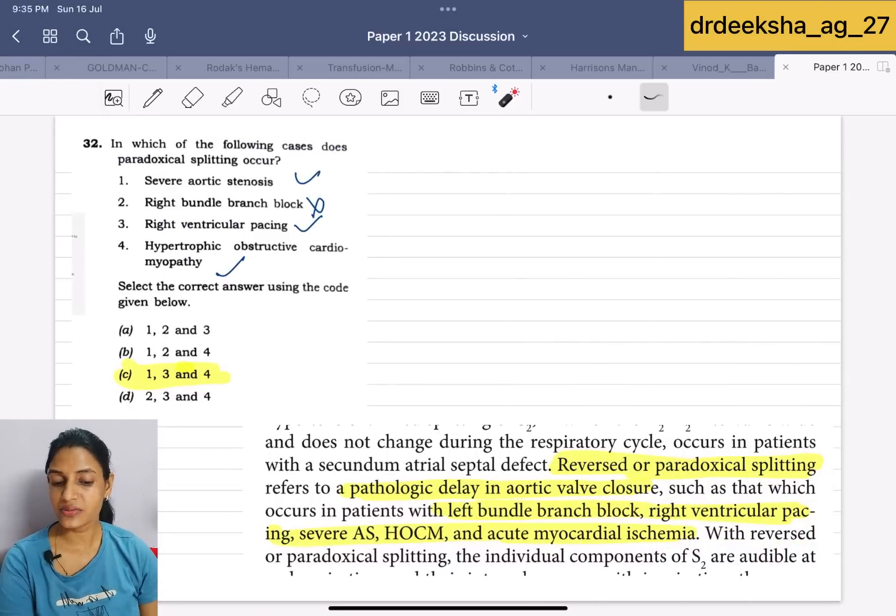Next they are saying is, which of the following causes does paradoxical splitting occur? Paradoxical or reverse splitting refers to the pathologic delay in aortic valve closure, which is seen in left bundle branch block. It is not right, it is left. Then, right ventricular pacing, severe aortic stenosis, HOCM, hypertrophic obstructive cardiomyopathy and acute MI. Answer for this is 1, 3 and 4.